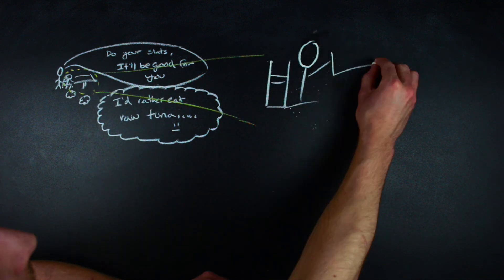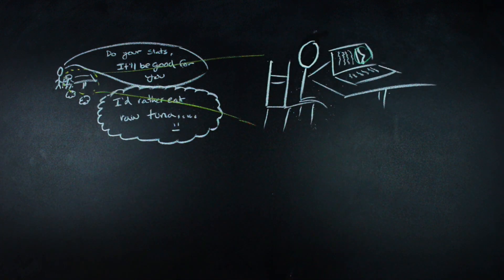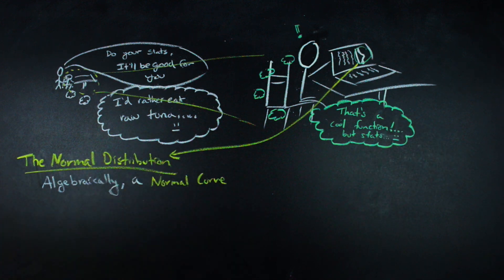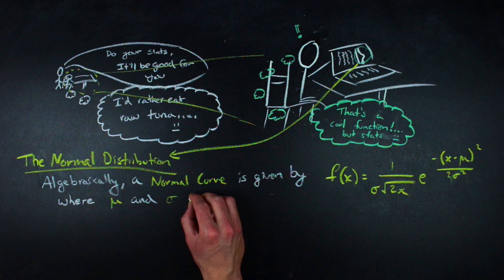One such object that's a little bit more accessible is the normal distribution, which is one of the most well-known distributions from statistics. Algebraically, here is the equation for a normal curve.